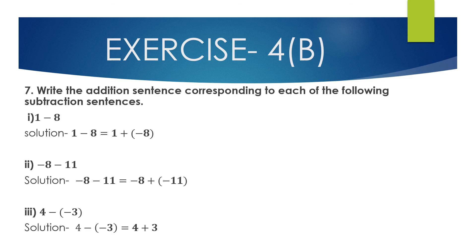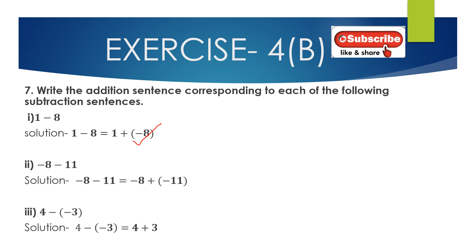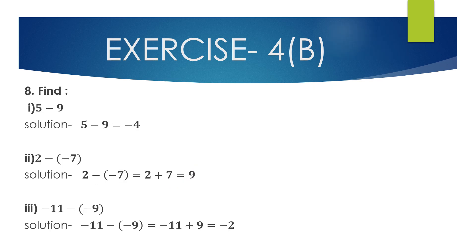Question 7: Write the addition sentence corresponding to each subtraction sentence. First: 1 − 8 = 1 + (−8). Second: (−8) − 11 = (−8) + (−11). Third: 4 − (−3) — since minus of minus is plus — equals 4 + 3.